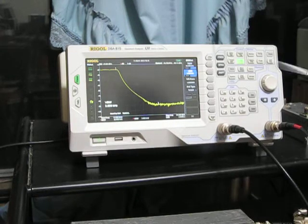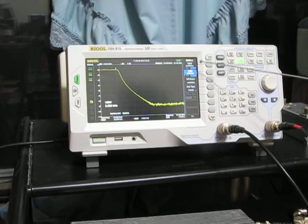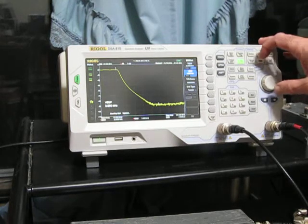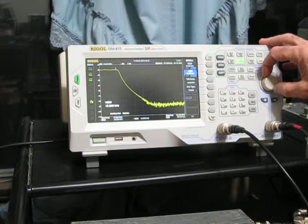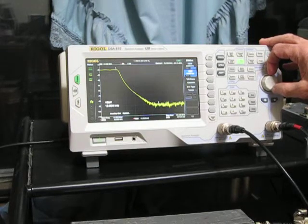So right now it's set to, if you look here, if you can see it, it's set to 3 kilohertz for the video bandwidth. And I'm going to adjust that up in frequency. Now it's at 10 kilohertz. You notice it's sweeping a lot faster.